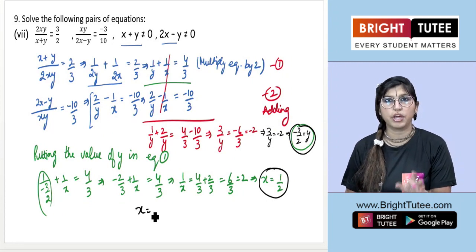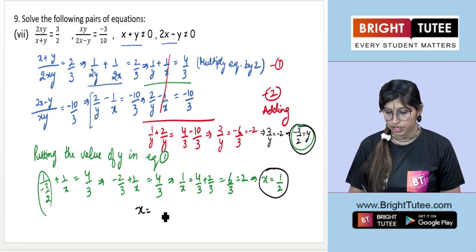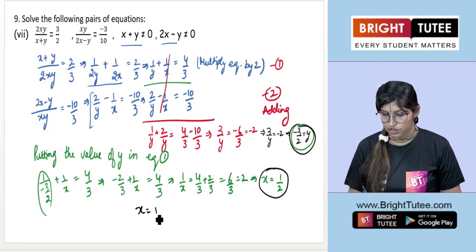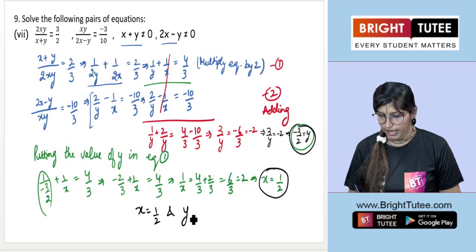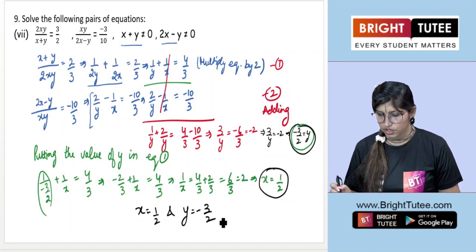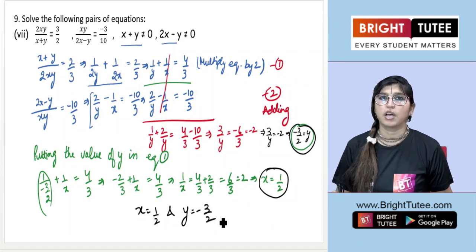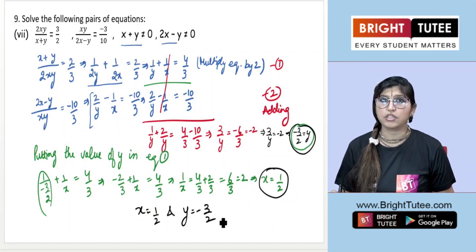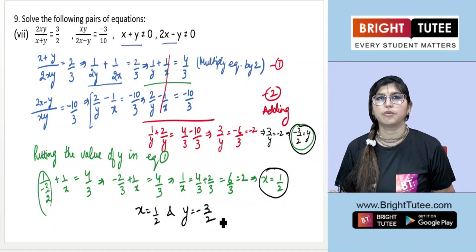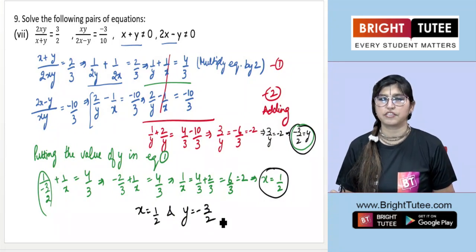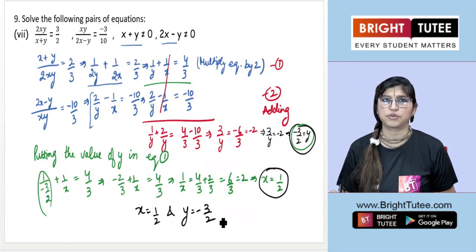So the unique solution of this pair of equations is x = 1/2 and y = −3/2. I hope you understood this question. Take care, we'll be coming up with other questions. Thank you.